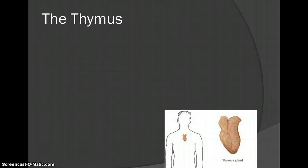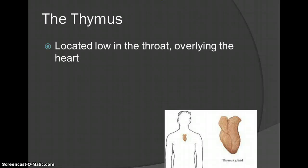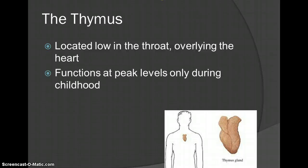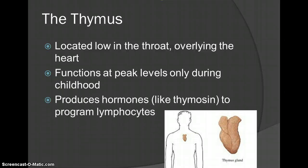The other part is the thymus. We've talked about the thyroid gland — it's a little bit different but located near the same area. The thymus gland is located low in the throat, overlying your heart. It functions mostly in childhood and produces hormones like thymusin to program lymphocytes. We talked about this in the endocrine system, and the big part are those lymphocytes, which we'll talk about in more detail later.